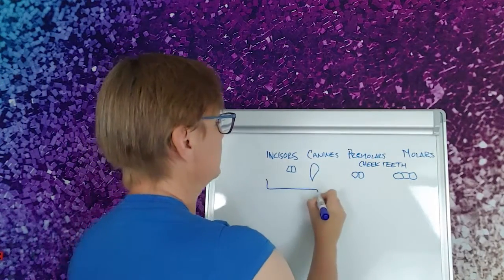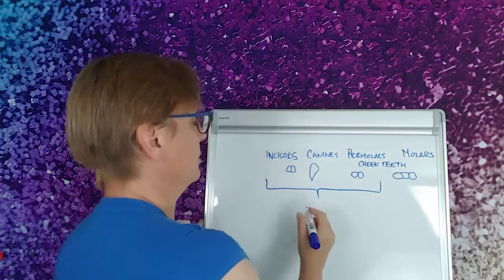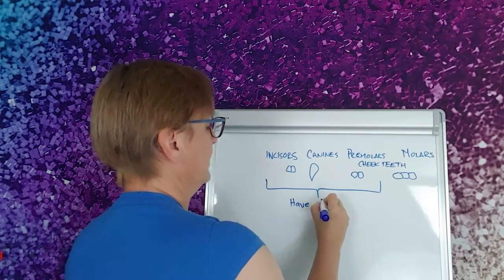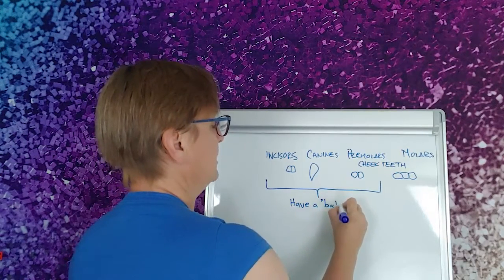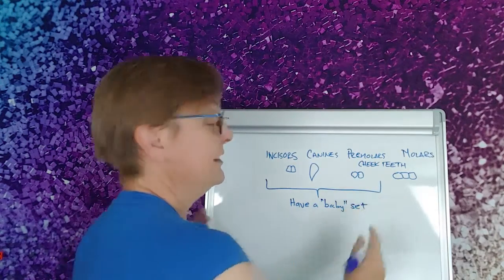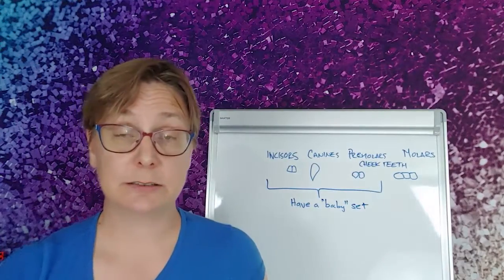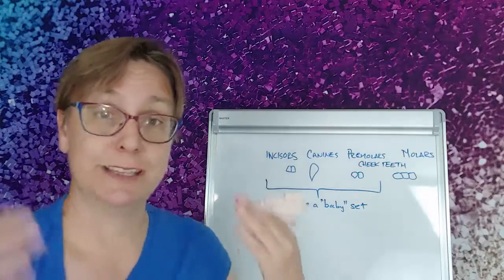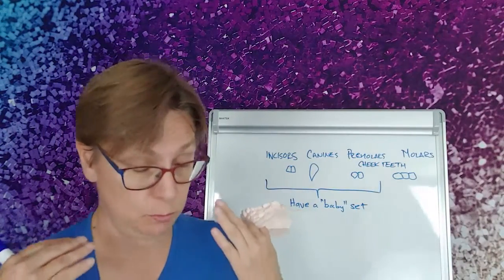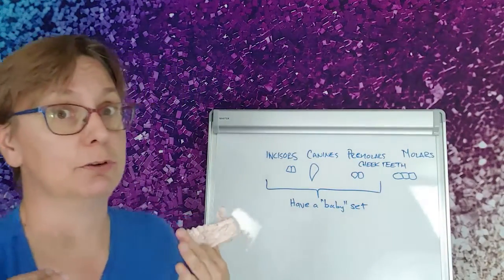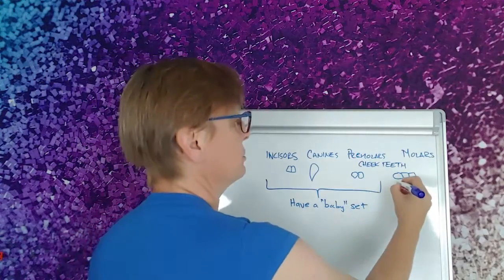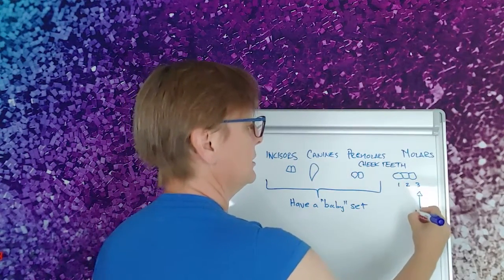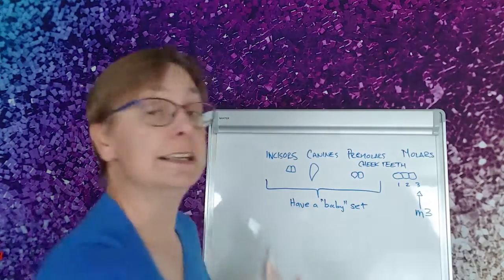These four teeth, these incisors, canines and premolars have a baby set. That is, we lose these as we're growing and they're replaced with much larger teeth. Whereas the molars, when they come in, the tooth that you get is the one you get for the rest of your life. And there's three molars: one, two, and three. And this one, the M3, is the magic one.